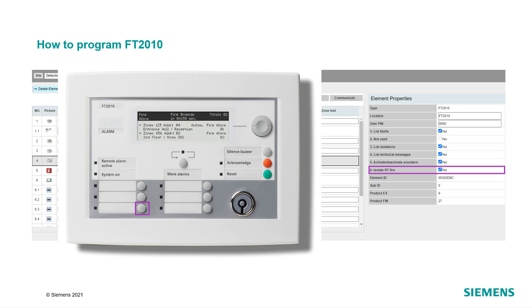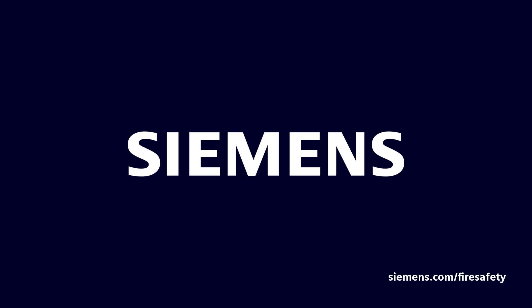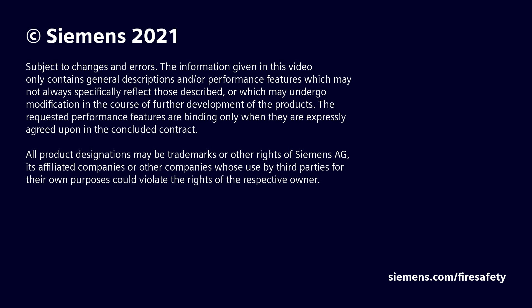The last configuration option is the function Isolate RT Fire, which means that, if it is activated, the user can disable the outputs configured as remote transmission fire with the button on the lower left. Please note that the key switch needs to be activated in order to use any of the program functions. Finally, apply the configuration to the panel and test the application.